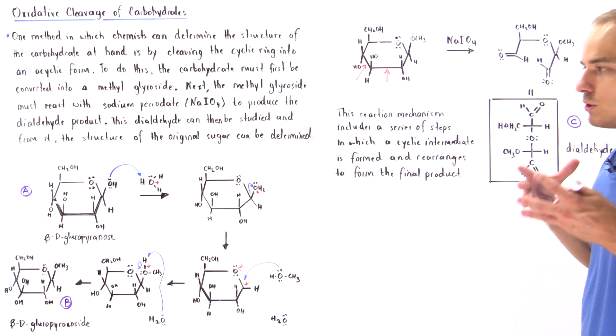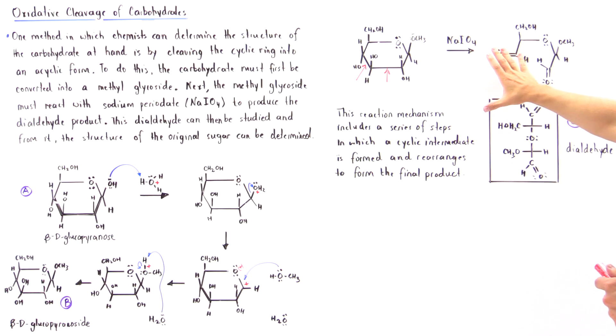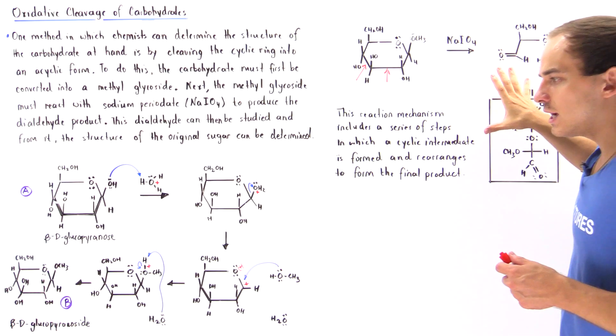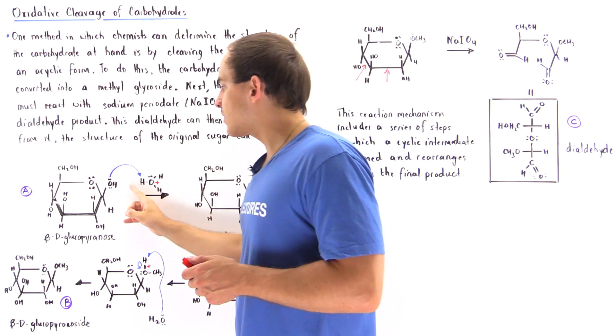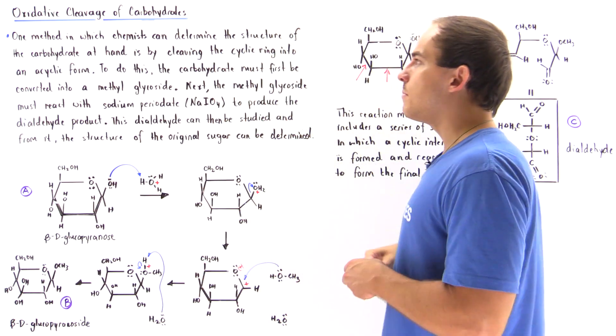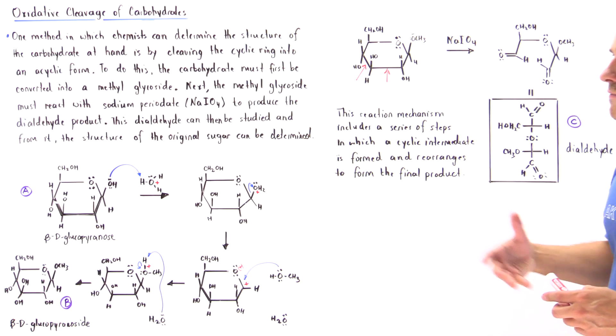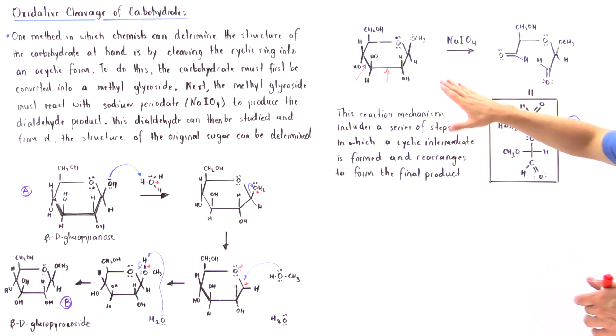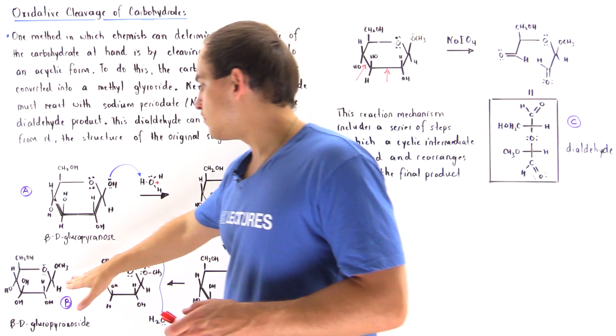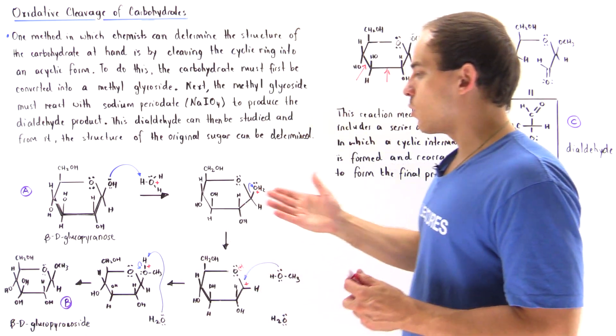And the reason that we did this is because in the next step, when we add the sodium periodate, we want to protect this group from undergoing any type of oxidative cleavage reaction. So once we form our protected molecule, the beta-D-glucopyranoside, let's call this molecule B.